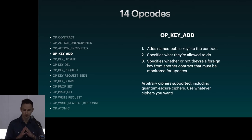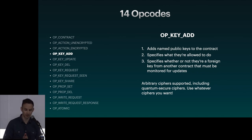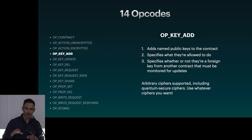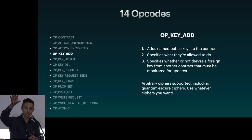OPKeyAdd adds a named public key to the contract. It specifies what they're allowed to do, specifies whether they're a foreign key from another contract that must be monitored for updates, and supports arbitrary ciphers — meaning if you want to include quantum-secure ciphers, you can. Use whatever ciphers you want. OPKeyAdd is actually part of OPContract as well, so when you create an instance of a contract you can add your keys instantly at the beginning.